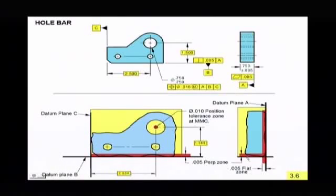What that is then is a zone, a total wide zone, two parallel planes five thousandths apart. That controls how much the surface could be tilted this way, how much it could be tilted this way. So that's the five thousandth perpendicularity zone.